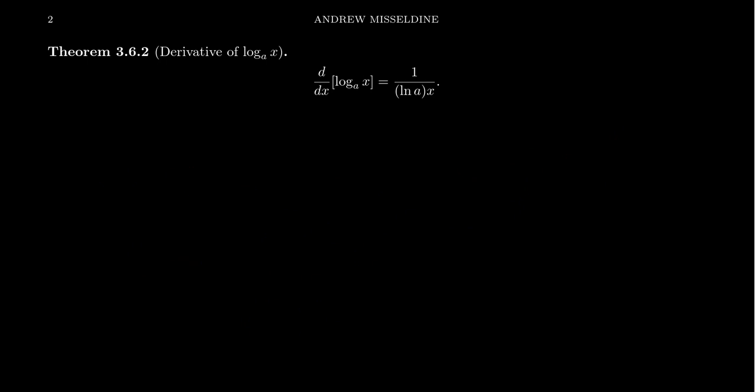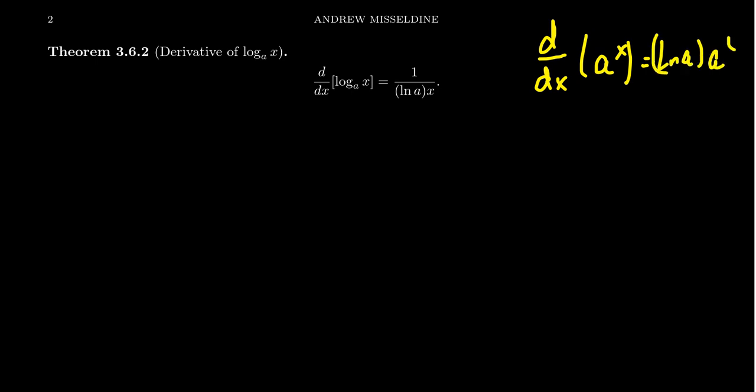We can extend this to general logarithms as well. The derivative of an exponential a to the x equals the natural log of a times a to the x — a generalization of e to the x, which equals its own derivative, which is e to the x times the natural log of e. If we compute the derivative with respect to x of the log base a of x, the derivative is going to be 1 over the natural log of a times x.